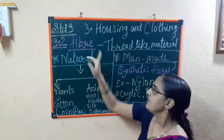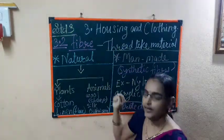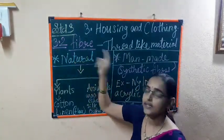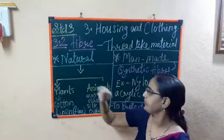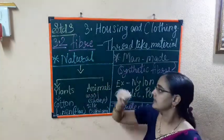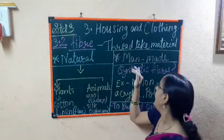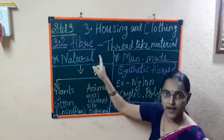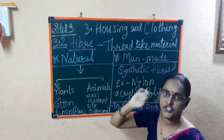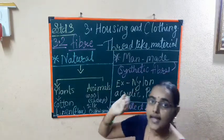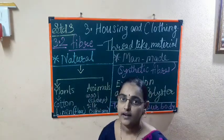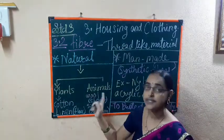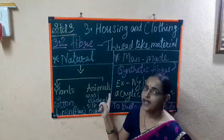Today we have learnt point 3.2 — Fiber. What is fiber? Fiber is thread-like material — it is nothing but a thread. Fibers have two types: Natural fibers and Man-made fibers. Natural fibers are the fibers that are obtained from nature. Natural fibers are divided into two categories: plant fibers and animal fibers.